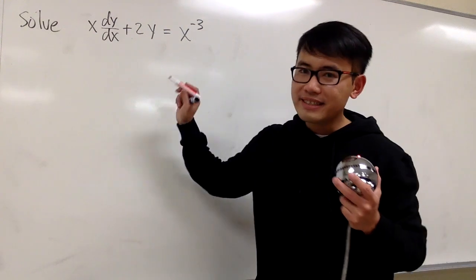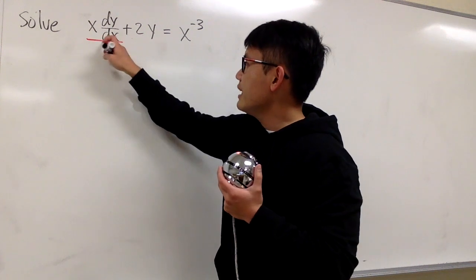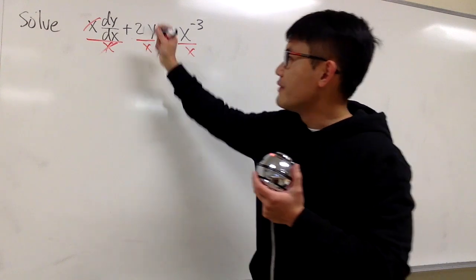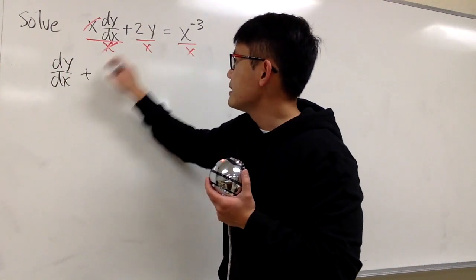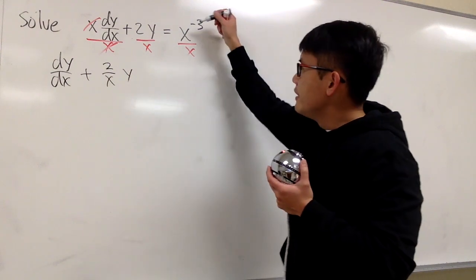This is not the standard form that we want, because we have this x right here. Let's go ahead and divide everything by x first then, so that this and that will cancel. And then we will have dy dx, and this is plus 2 over x, and let's put the y on the side.